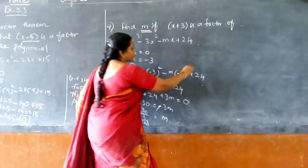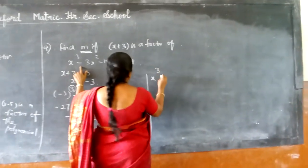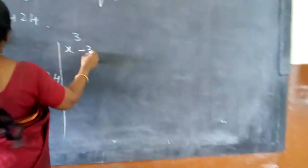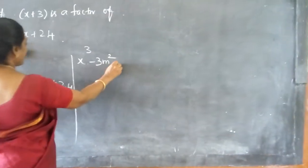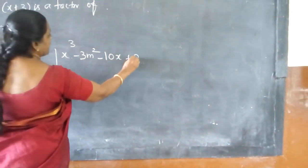So we can write the equation as. You have to write the equation, then you will get the whole marks. Otherwise you will not be getting. Keep in mind always, try to put the value of m in the exact place. x cube minus 3x square minus, the value of m is 10, so minus 10x plus 24.